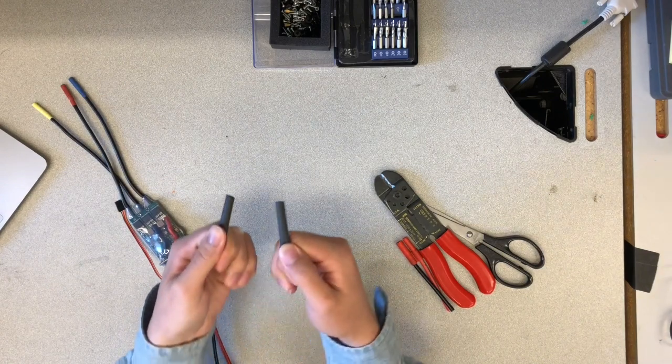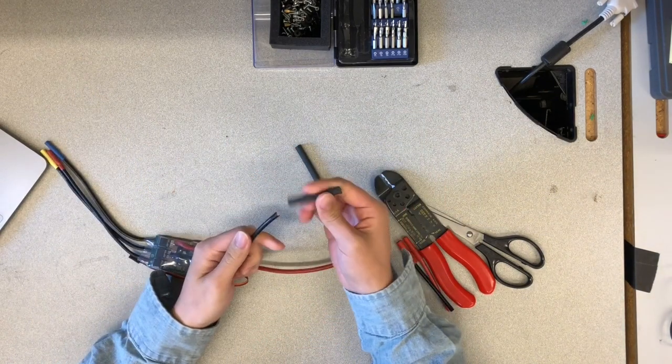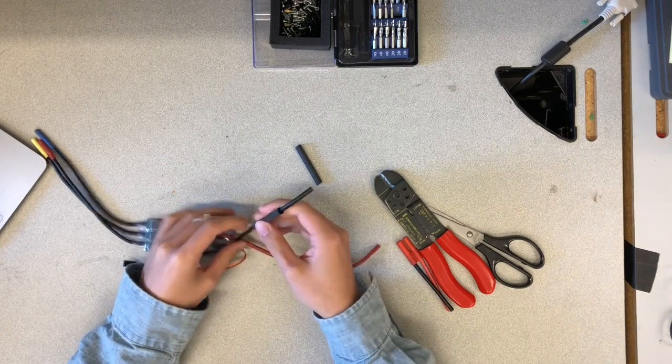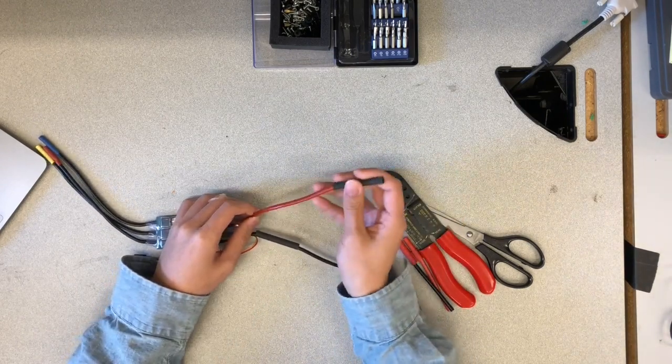First, we will need to prepare a quarter inch heat shrink. The length should be approximately a little bit longer than the solderless wire connector. Slip the piece of heat shrink into the VESC battery wires.